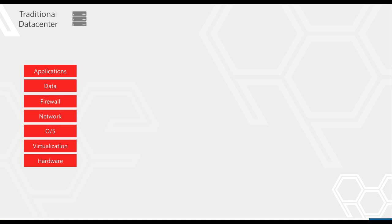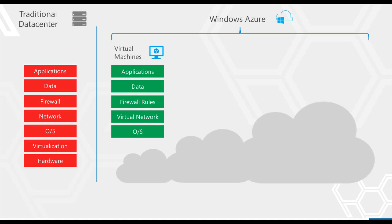To get started, I'd like to compare the traditional stack of a traditional data center with the various compute models offered by Windows Azure. In a traditional data center, you own everything from the hardware, servers, network, switches, and cabling, all the way through virtualization, operating system, firewall, and applications. Where the cloud comes in different is offering different pieces of this as a service. Virtual machines offer very deep control by providing the virtualization and hardware aspects of the stack to you as a service.